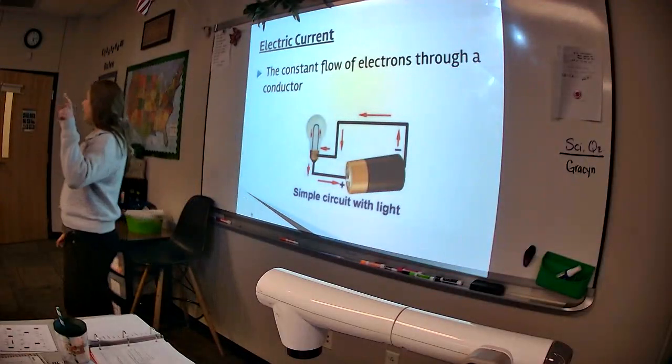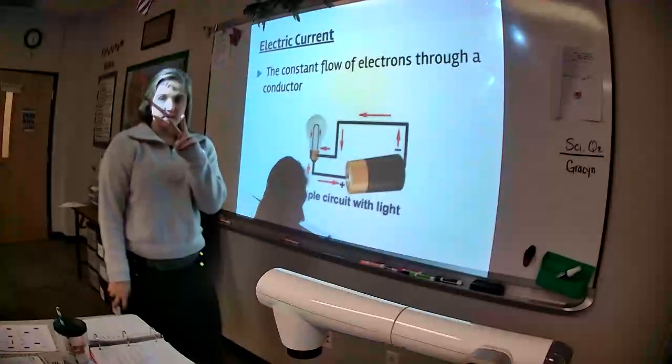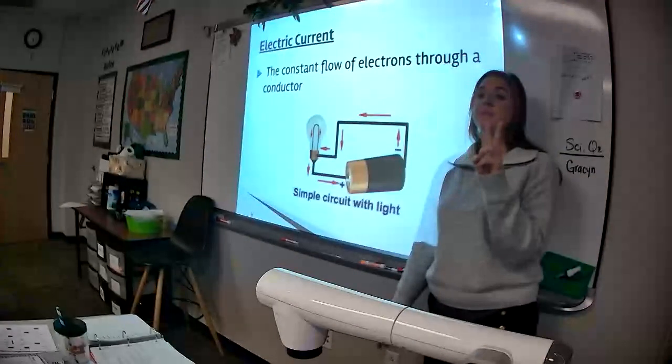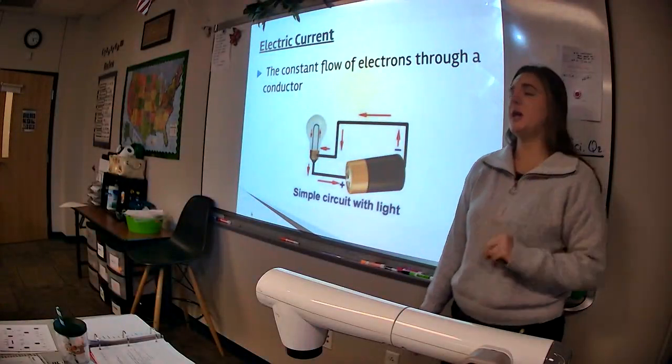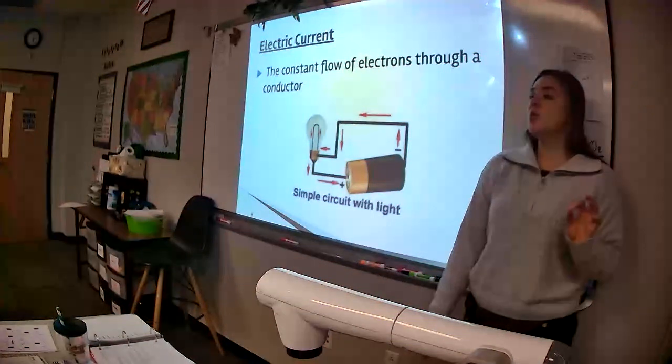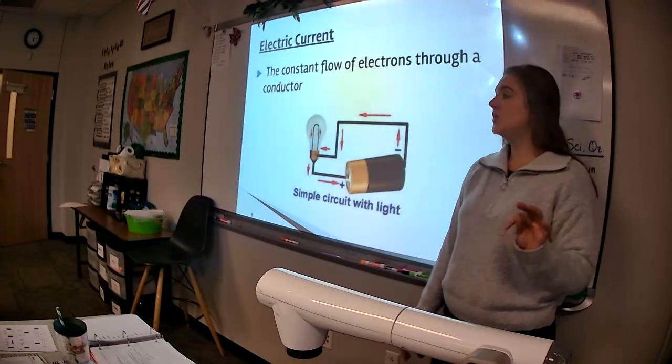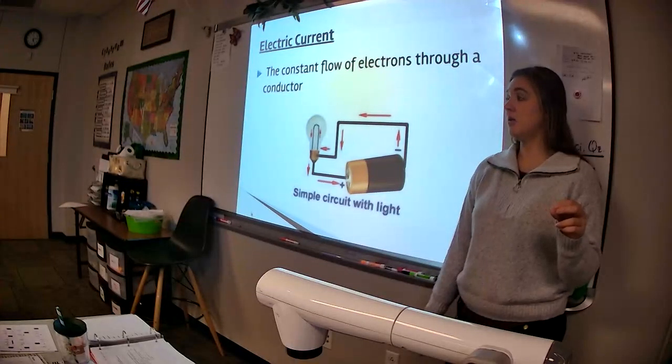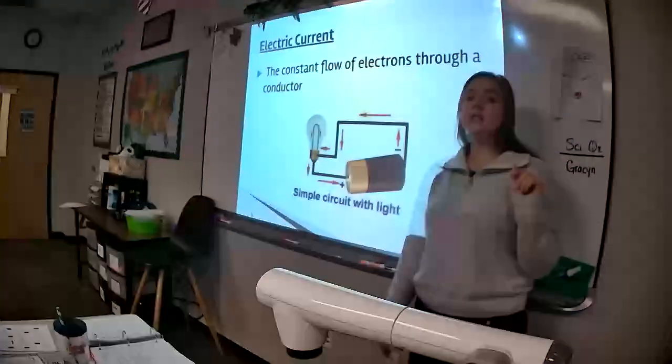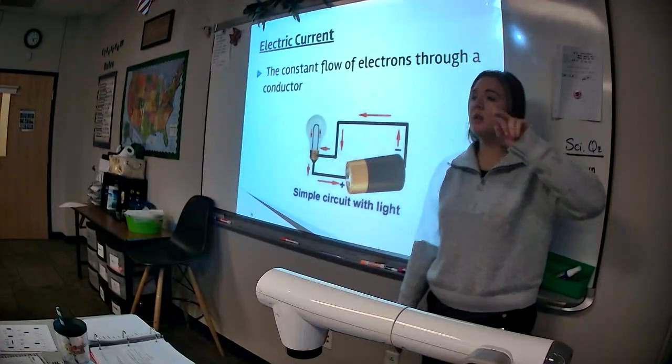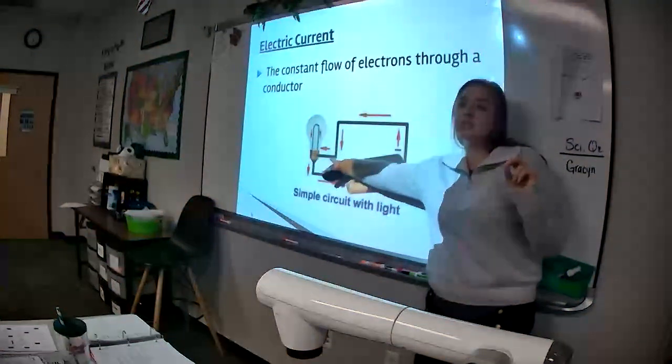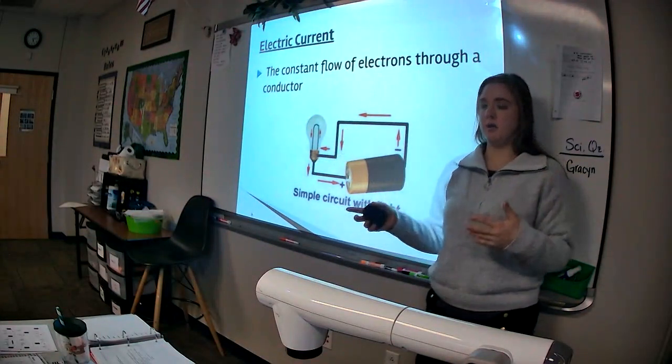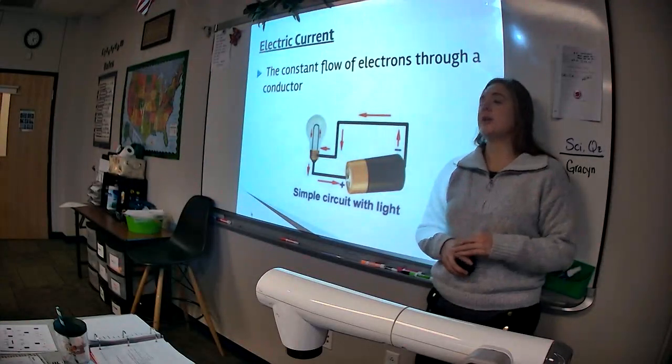Now, there are two types of circuits. What are the two types called that we discussed on Friday? Hannah? An open circuit. Good. An open circuit and a closed circuit. Which type of circuit will turn the object on? Which type of those two, open and closed, which type will turn the object, maybe a light bulb, will turn the object on? Kayla? A closed circuit. Good.